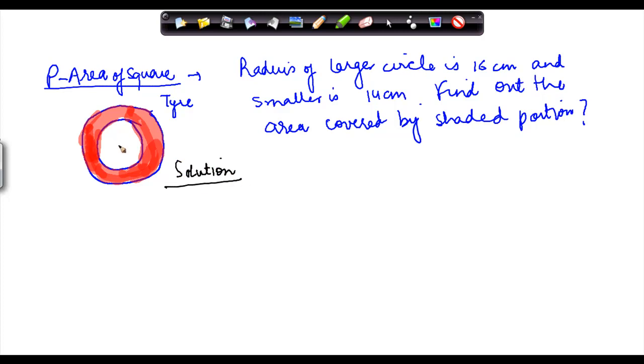We have been told that this radius is 14 cm and this larger radius is 16 cm. So we have to find out what is the area covered by this red portion. The area covered by this red portion is nothing but the difference between the area of the larger circle and the area of the smaller circle.